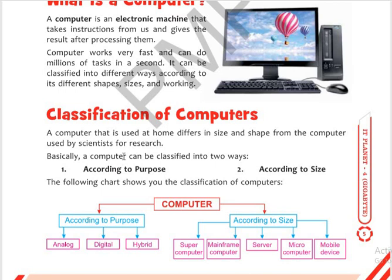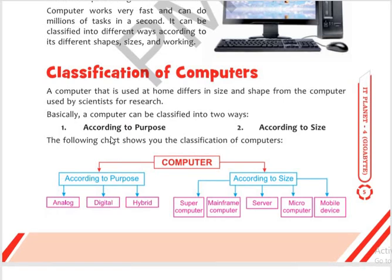Computers are classified into two types: first is according to purpose, and second is according to size. According to purpose, there are three types: analog, digital, and hybrid. According to size, there are five types: supercomputer, mainframe computer, server, microcomputer, and mobile device.